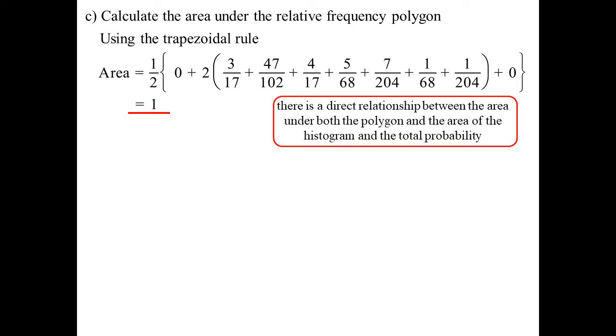This is why, and you've probably never been explaining this before, but this is why we join to the spot before. You might have thought, when we join polygons, why on earth do we extend this polygon to the one before and the one after? It's so we can get that area underneath the curve to be 1. Because there is a direct relationship between the area under both the histogram and the polygon and the total probability itself.